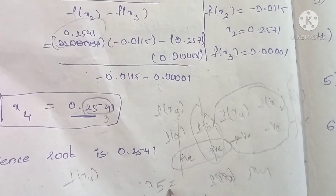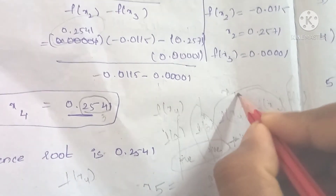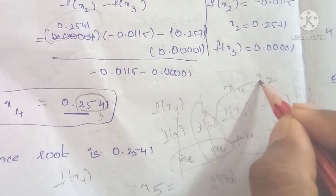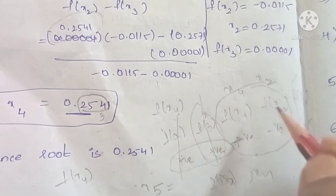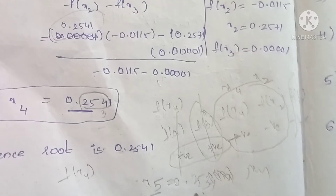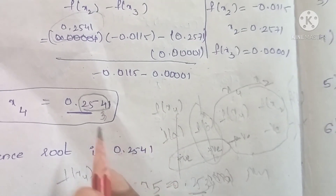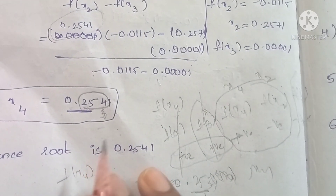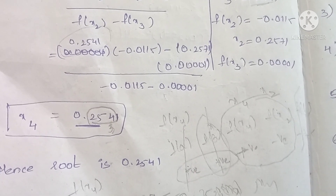So x5 = (x4 × f(x2) - x2 × f(x4)) / (f(x2) - f(x4)). The x5 root value is 0.2531. The last 3 digits of x4 and x5 are equal at 253, so we stop. The final answer by the Regular Falsi method is approximately 0.2531. Thank you for watching this video.